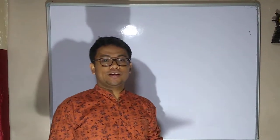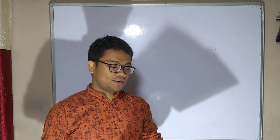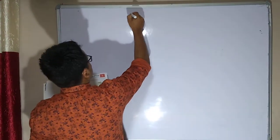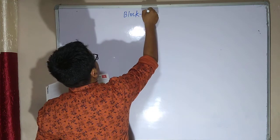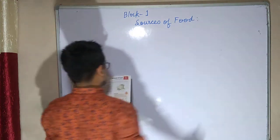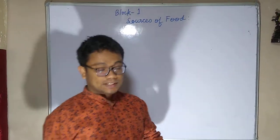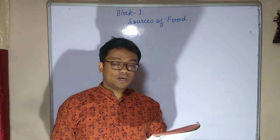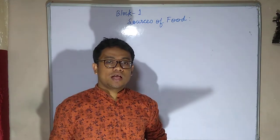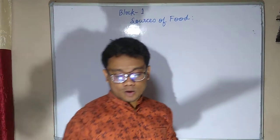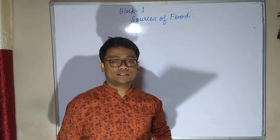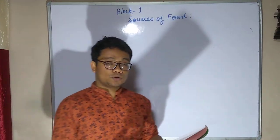Hello, dear children. Today we are going to read Science, Block One. The chapter's name is 'Sources of Food.' In Lesson One, we are basically going to learn about food from plant parts. As you know, we eat so many plants, but not every part of a plant is consumable. So we will discuss which parts we actually consume.